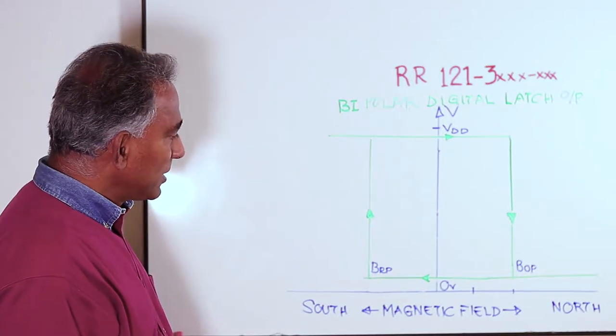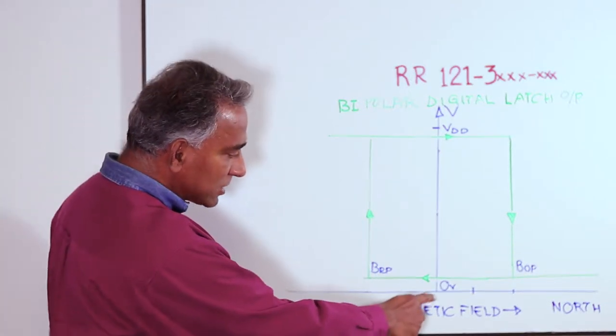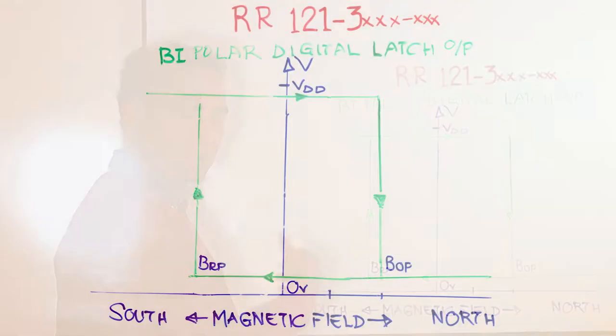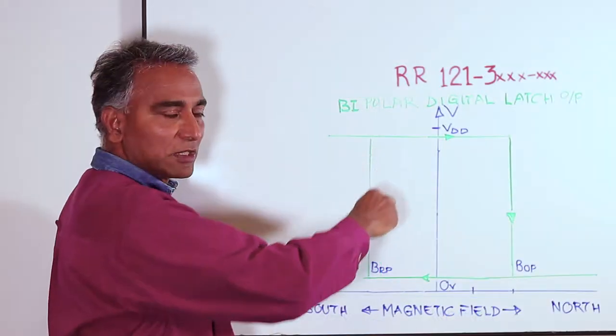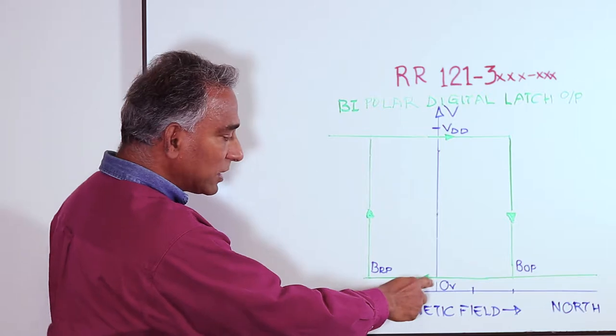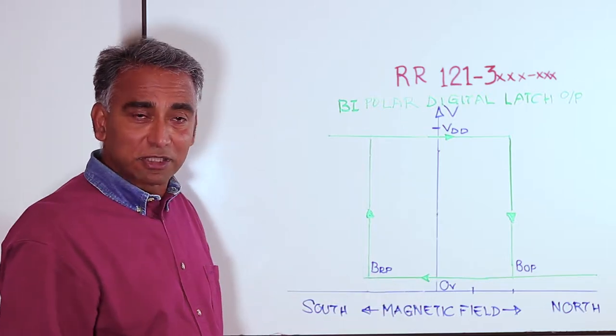What we see here straight away is at zero magnetic field strength representing when the magnet is far away, the output of the sensor could be either a digital high which is an off state or a digital low which is an on state.